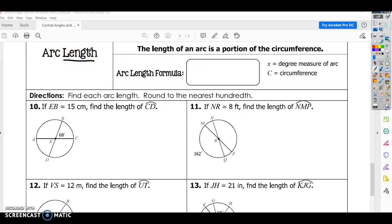So the arc length is the length of the distance from one point to another around the edge of the circle. So it's basically part of your circumference. The arc measure was the same as the central angle, but the length of the arc we're going to look at in terms of a formula.